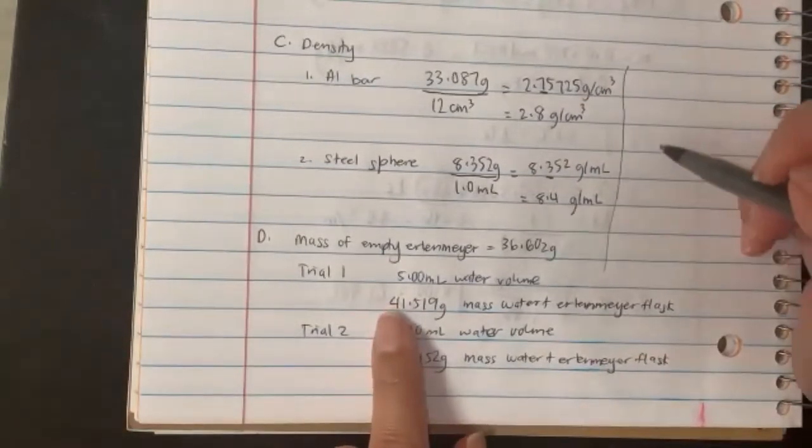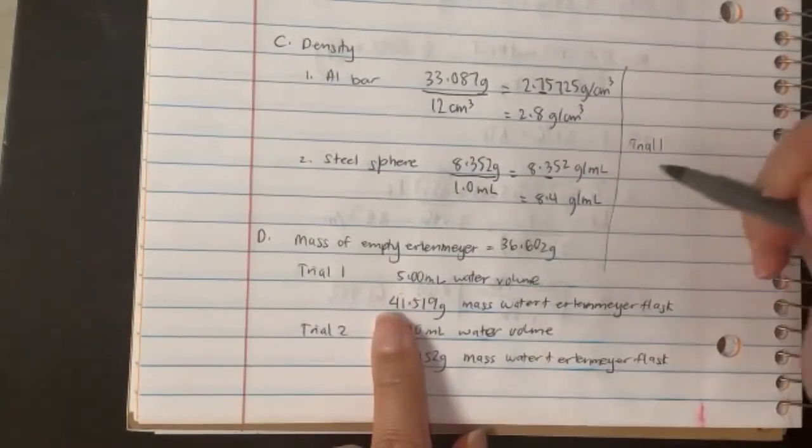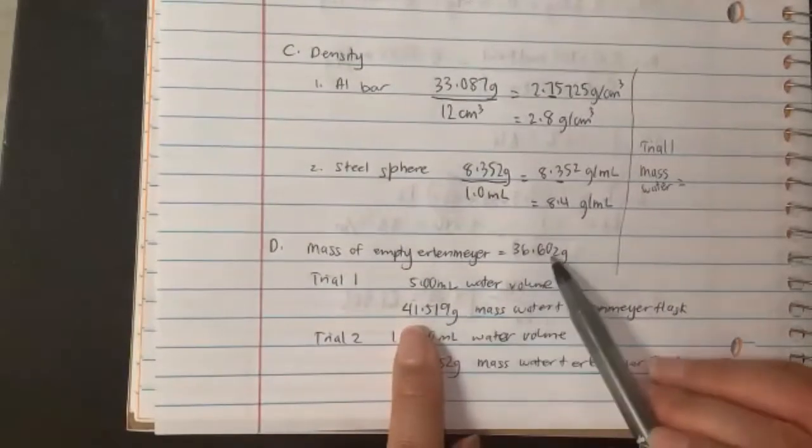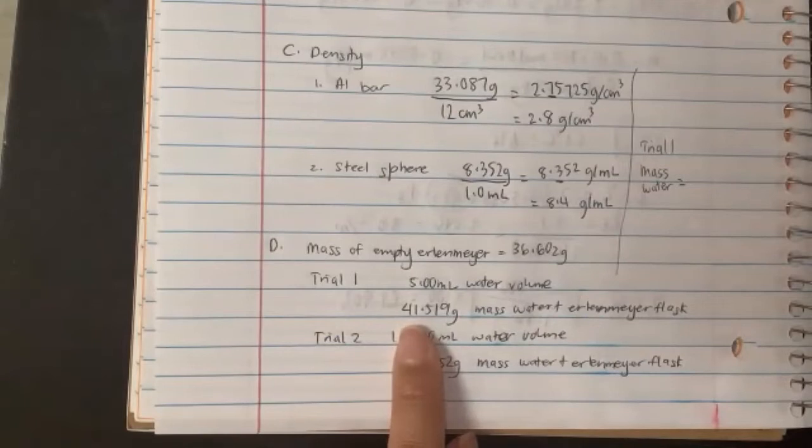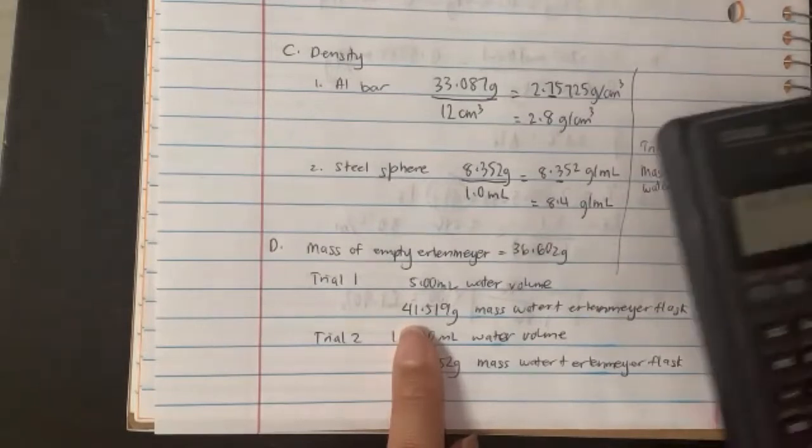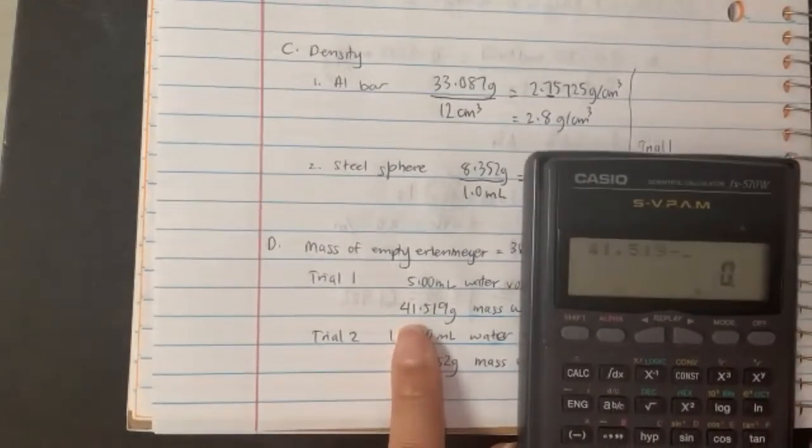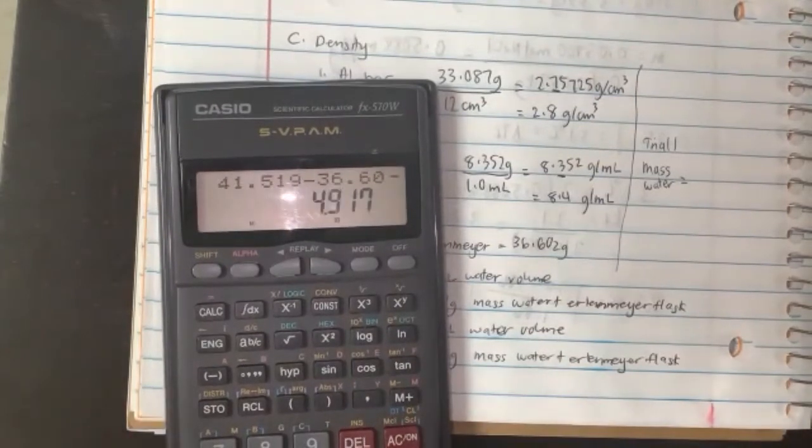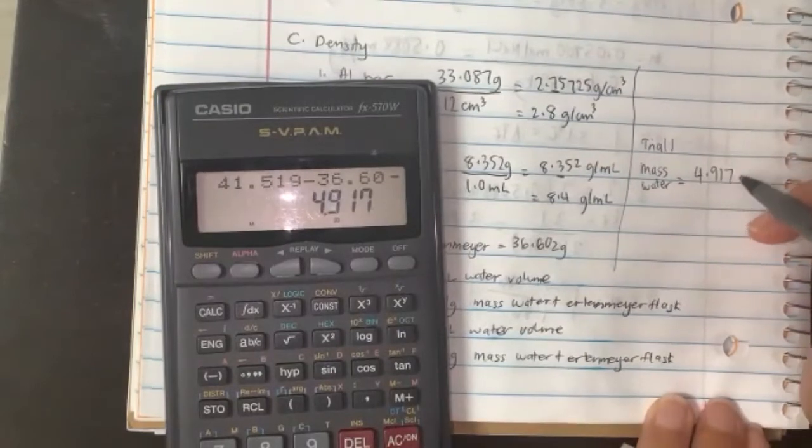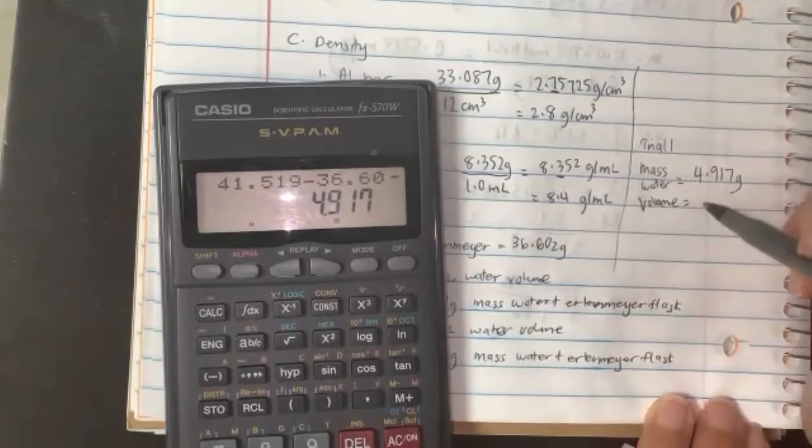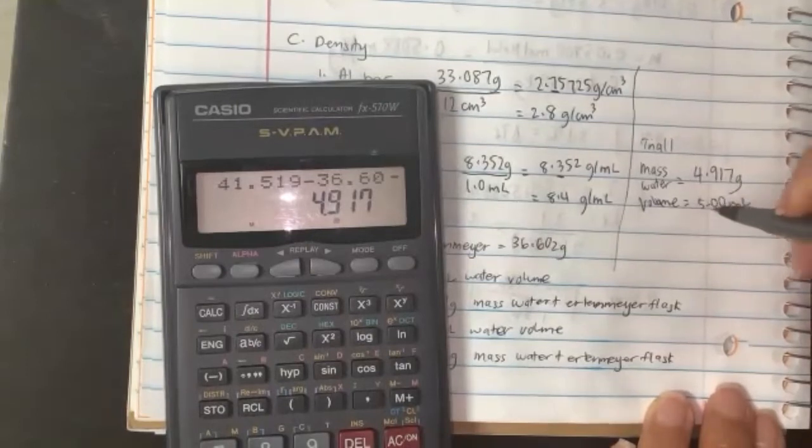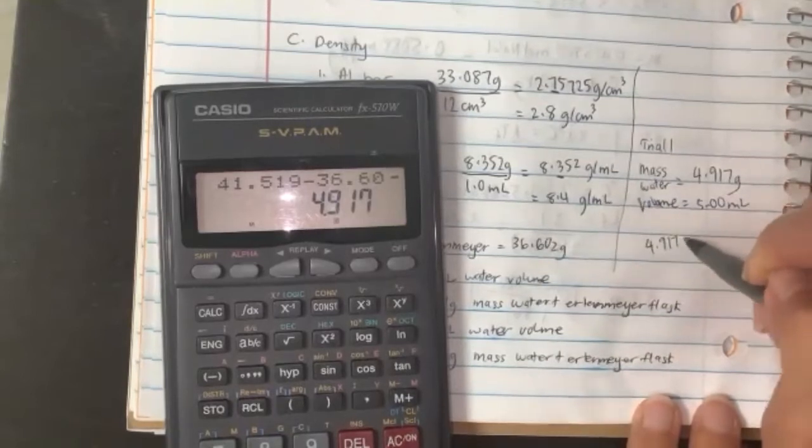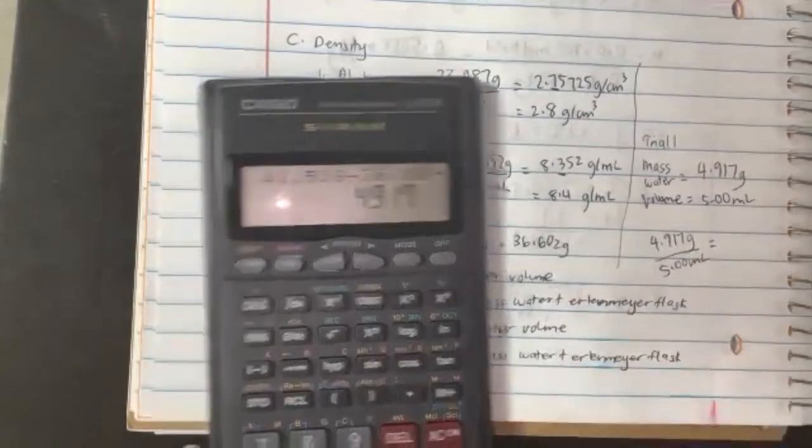For trial one, mass of water would be 41.519 minus 36.602. Putting this in my calculator: 41.519 minus 36.602, I get 4.917 grams. The volume measured from the burette was 5.00 milliliters. So grams per milliliters gives you the density. Taking 4.917 grams divided by 5.00 milliliters gives the density.